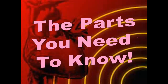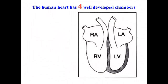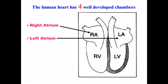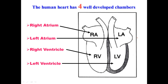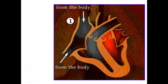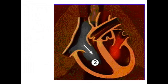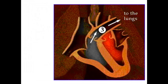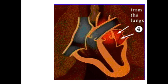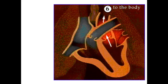So what parts of the heart do you actually need to know? Well, you might remember from grade 8 that this is the right atrium, the left atrium, the right ventricle, and the left ventricle. You'll notice they are on opposite sides of what you think is right and left, so make sure you always remember not to confuse that. If you look at this animation, you'll notice blue blood comes into the right side of the heart and gets pumped to the lungs, and red blood comes into the left side of the heart and gets pumped to the body.